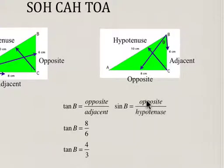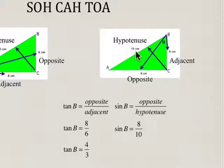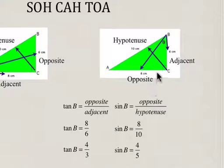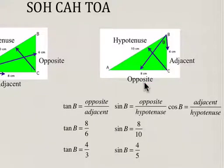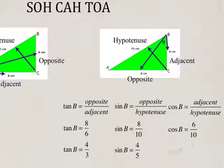For angle B, sine is opposite over hypotenuse. The opposite is 8 and the hypotenuse is 10, so the ratio is 8 over 10, which reduces to 4 over 5. For cosine, cosine of angle B is adjacent over hypotenuse. The adjacent side is 6 and the hypotenuse is 10, so cosine of angle B is 6 over 10, which reduces to 3 over 5. Those are the trig ratios for angle B.